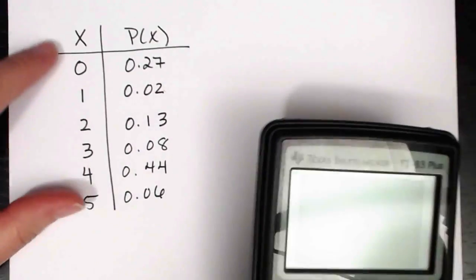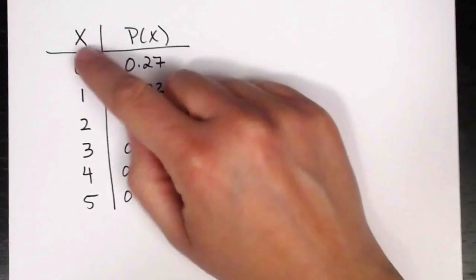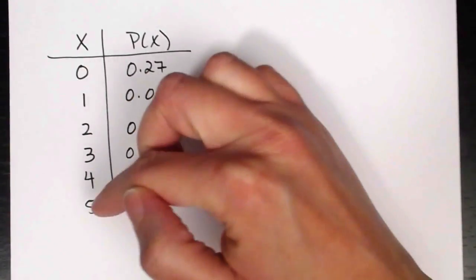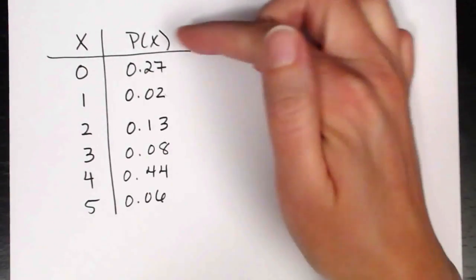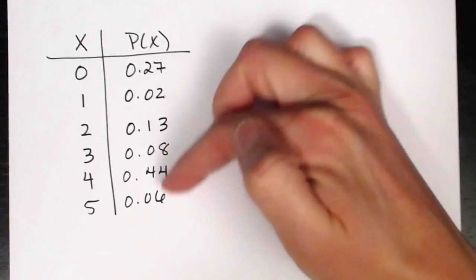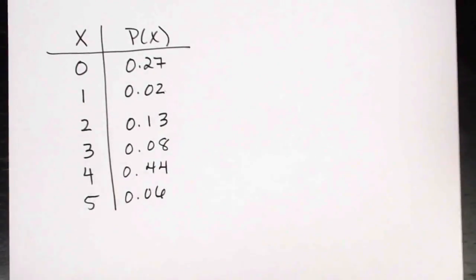Here's the probability distribution we're going to be dealing with. We've got all of our possible outcomes listed here — 0 through 5 — and the probabilities associated with each possible outcome.